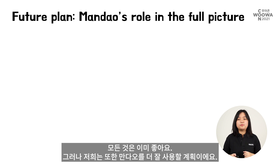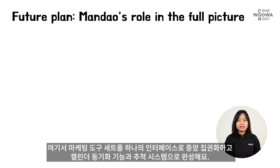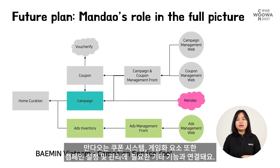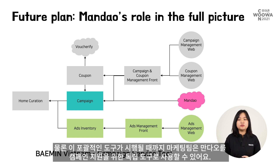Both marketers and developers don't need to squint their eyes to read code anymore. We can focus more on our product roadmap because we have fewer ad hoc requests — it's a win-win situation for all. This is all good, but we already have plans for even better use of Mandau. In the future, we're going to connect Mandau to be part of our comprehensive tool, which we are calling the Campaign Service Tool. This is where we centralize all the marketing toolset into one interface, complete with calendar synchronization and a tracking system. Mandau will be linked with our coupon system, gamification component, and other functions necessary for setting up and managing campaigns. Until this comprehensive tool is in effect, marketing can use Mandau as an independent tool to assist with their campaigns.